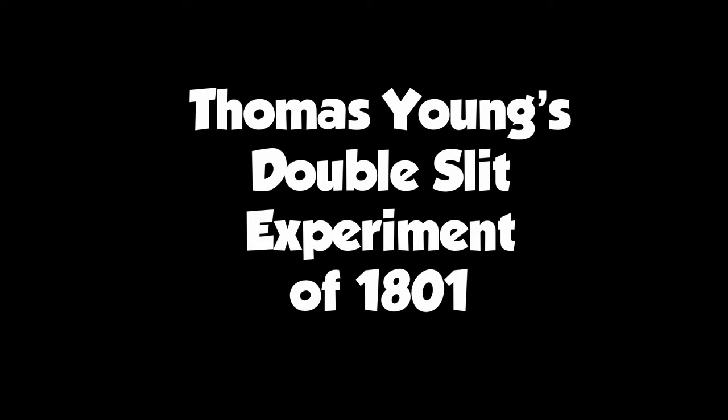This is a short analysis of Thomas Young's double-slit experiment of 1801. This is a time before quantum mechanics and before the duality nature of light, before Einstein, well before all that. At this time, there's a raging argument about light being a particle versus light being a wave.